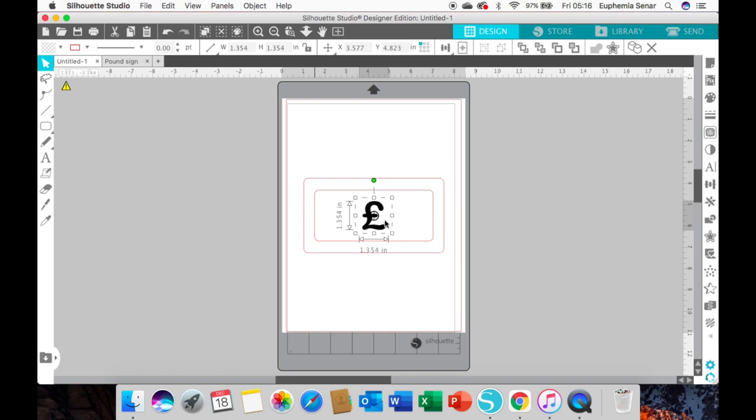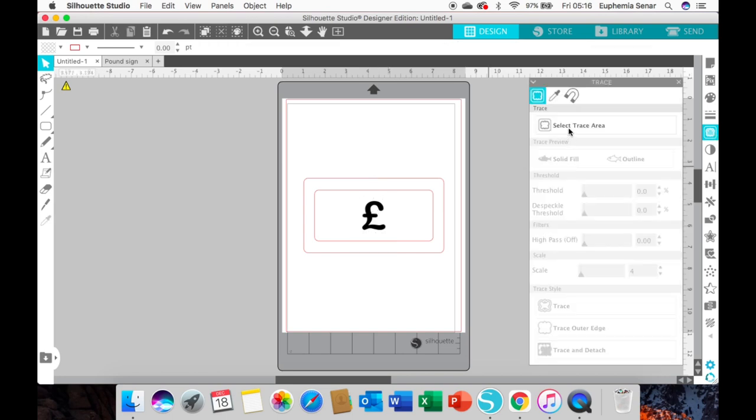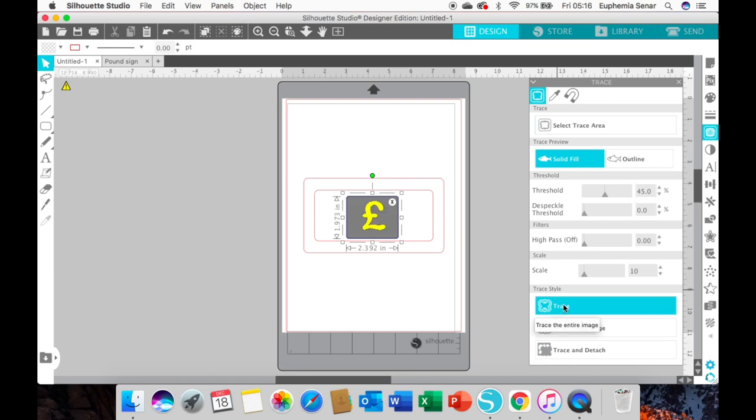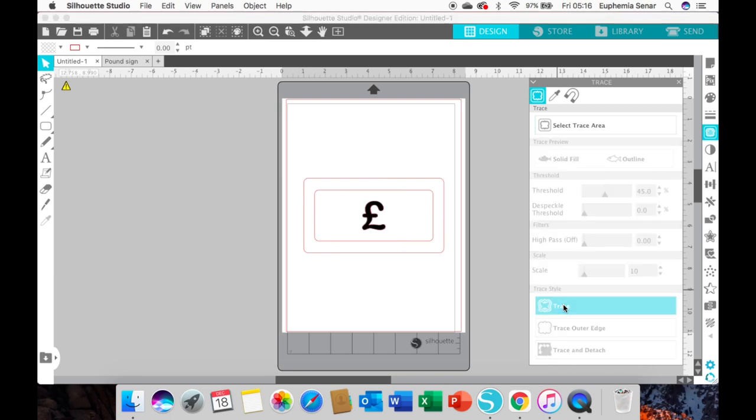Now, because I don't actually want the pound symbol on my envelope, I just want the outline, I need to trace it. I've got to take a trace tool over my image, select my trace area, and then I can remove the actual pound sign itself and be left with an outline.